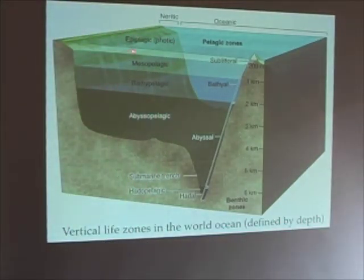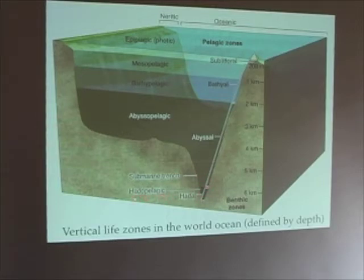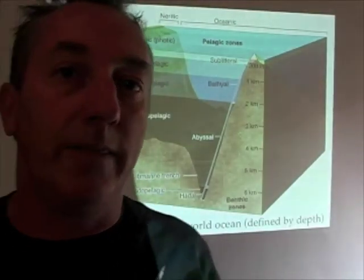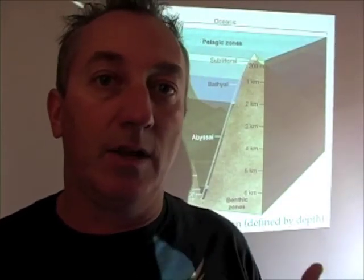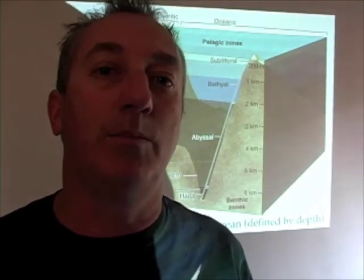The bathypelagic zone is below the mesopelagic, and it's really where we find the final remnants of truly abundant life. Then the abyssopelagic, which is sparsely populated by organisms. At the bottom of a submarine trench, we define the hadopelagic zone — the very deepest parts of the world ocean. Whether these zones exist depends on depth: in shallow coastal regions there may only be an epipelagic zone, while the hadopelagic is found only in submarine trenches.